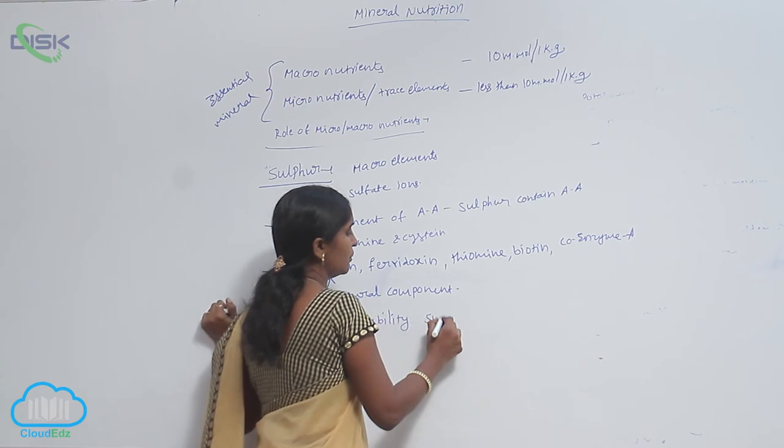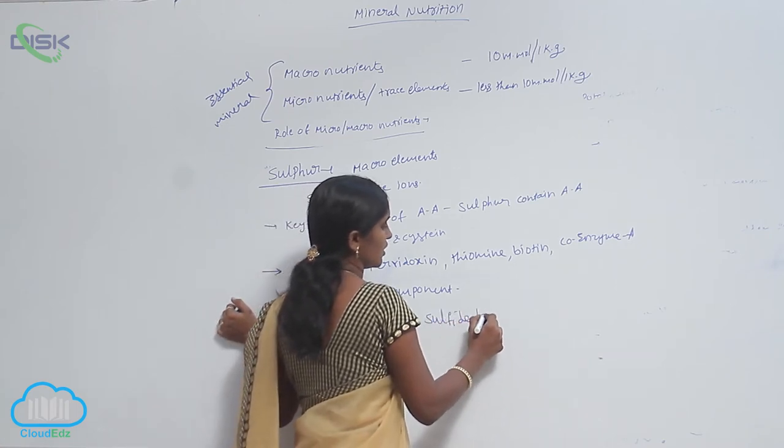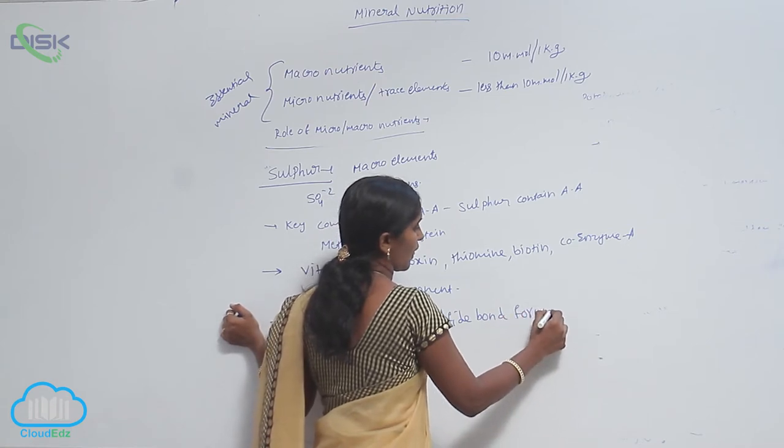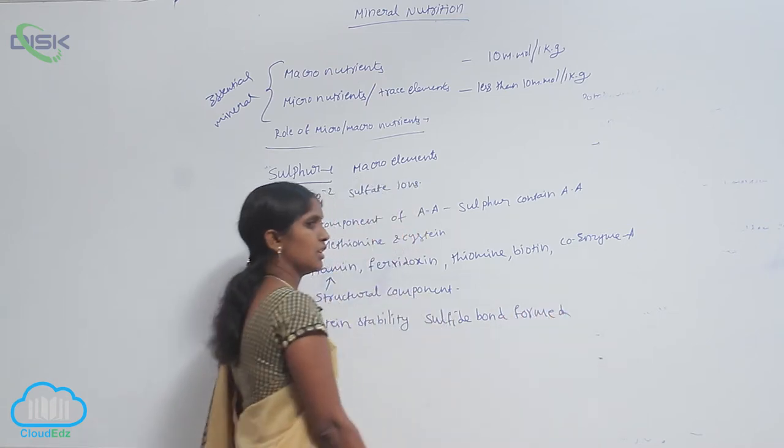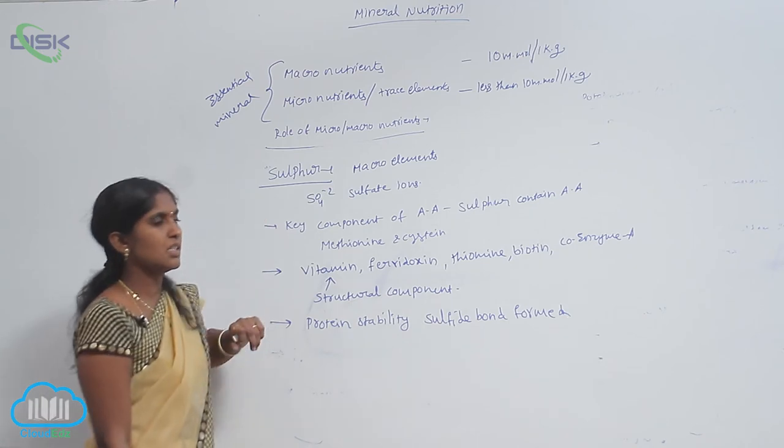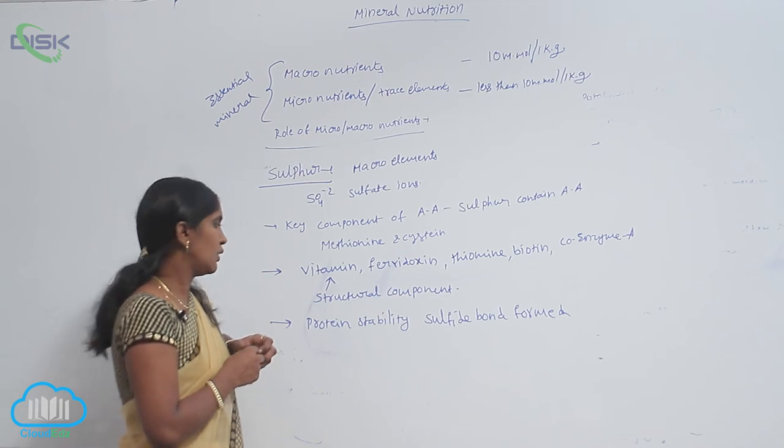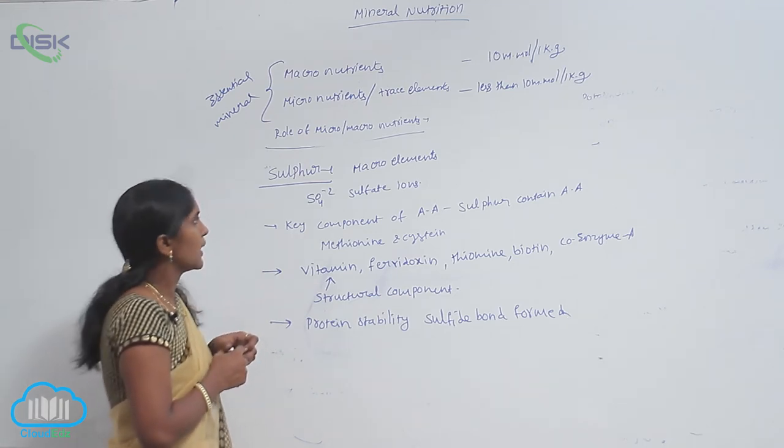Sulfide bonds are formed in proteins. In the protein structure, sulfide bonds are used to maintain protein stability.